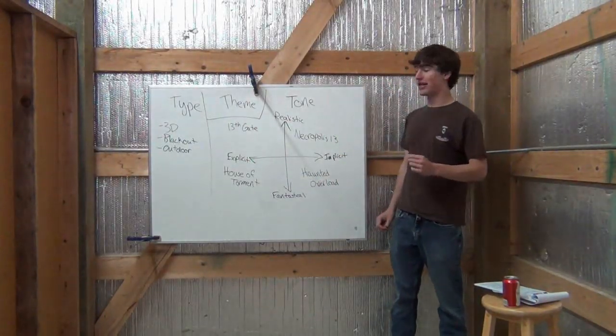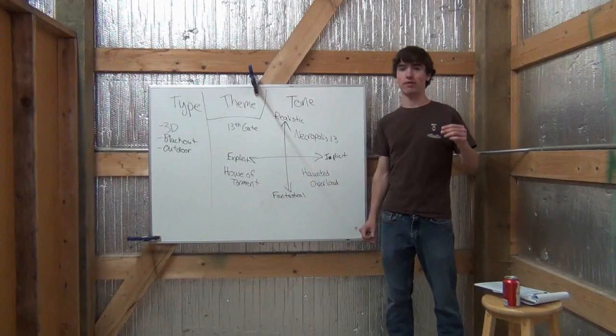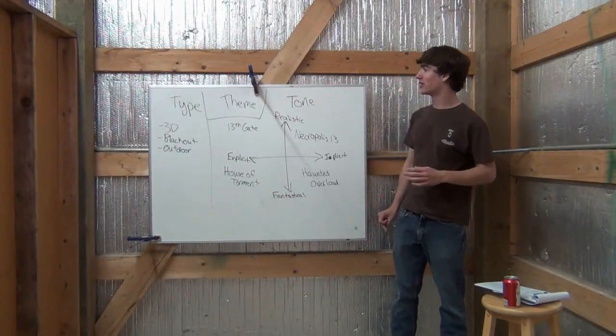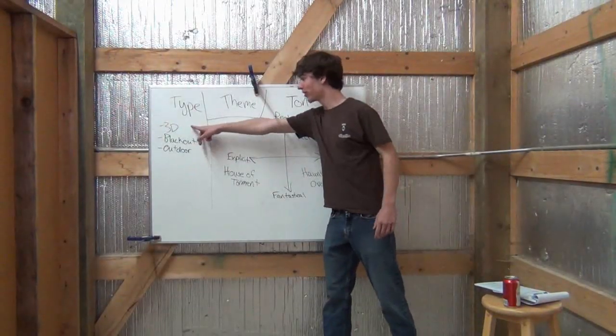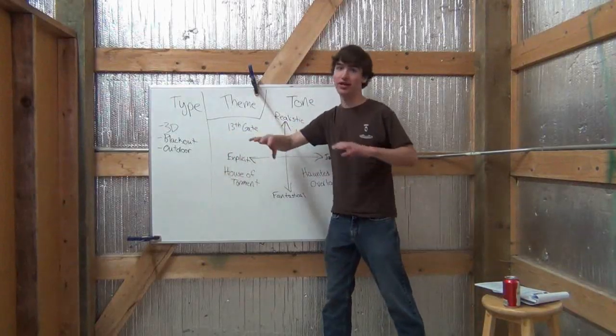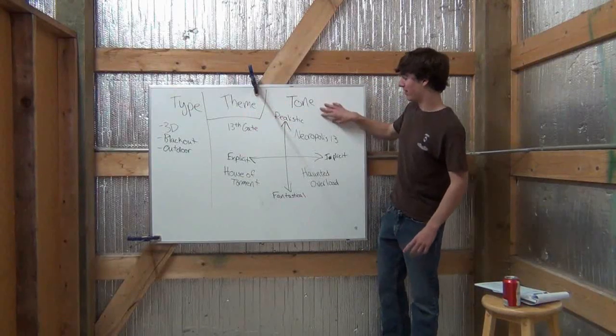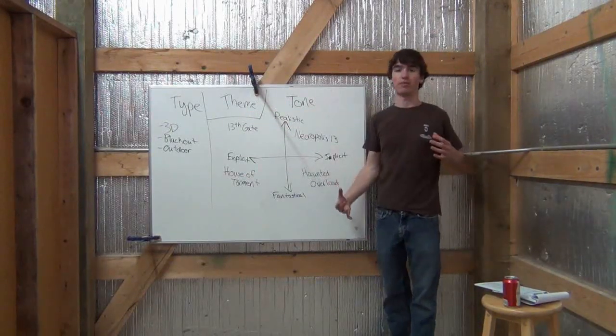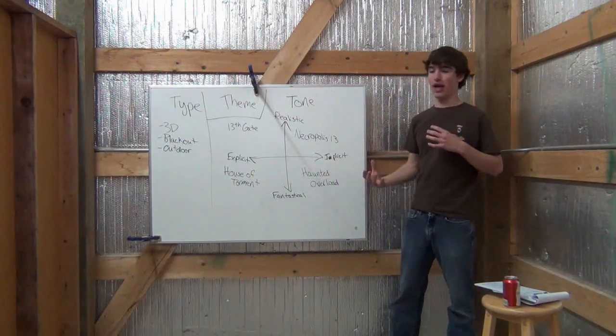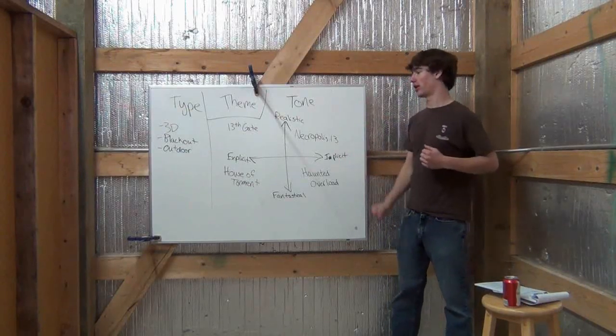And I think one of the best things that a scream park owner can strive for is to have haunts not only with different types, so a 3D haunt, a blackout haunt, an outdoor haunt, a traditional indoor, not only with different themes, but also with different tones to appeal to different kinds of people, and that's the best way that we're going to capture the most audience with it.